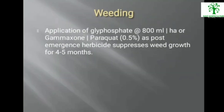Application of glyphosate at the rate of 800 ml per hectare, or Gamazon or Paraquat 0.5% as post-emergent herbicide, suppresses weed growth for 4–5 months.